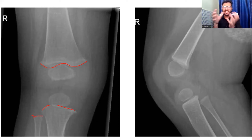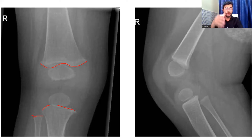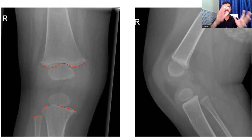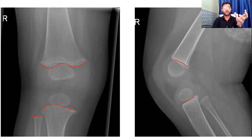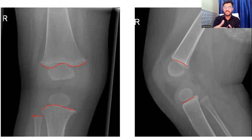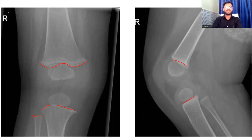If you see some irregularity on this AP or lateral view, apart from these normal growth plates, then that might be a problem — there might be osteosarcoma, some type of bone tumor, fracture, or a greenstick fracture. The R written here indicates that this is an x-ray of the right knee.